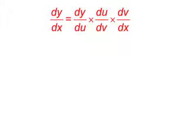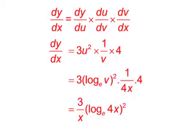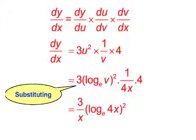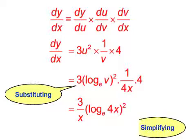Substituting for dy/du, du/dv, and dv/dx, we get the following. And substituting back, we get an answer of 3 over x, brackets, log of 4x, all to the power of 2, after simplifying.